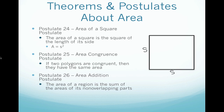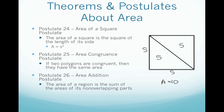Moving on to Postulate 26, the area addition postulate. This states that the area of a region is the sum of the areas of its non-overlapping parts. For example, if we divide a square into two triangles, each with an area of five, the area of the square is going to be the sum of those non-overlapping parts: five plus five equals ten. So if you add up all the non-overlapping parts, you get the area of that polygon.